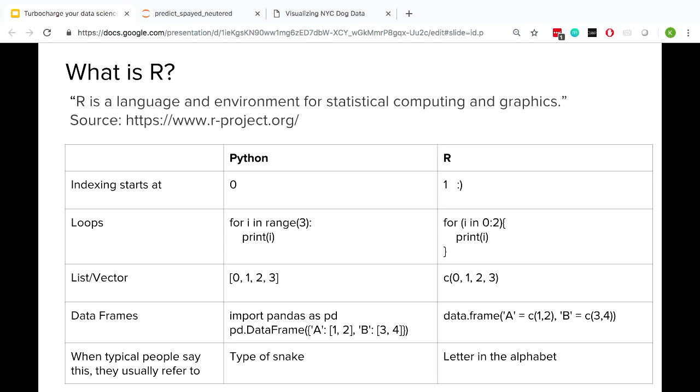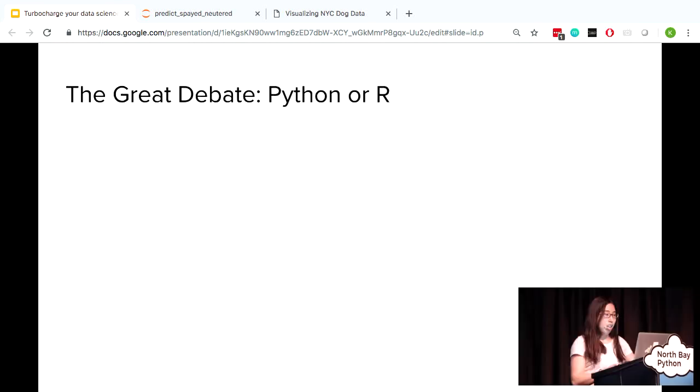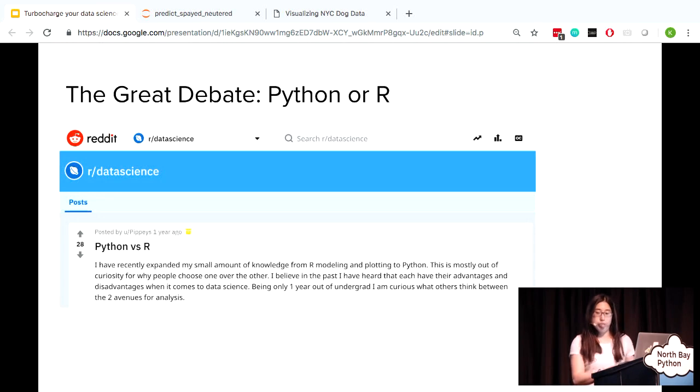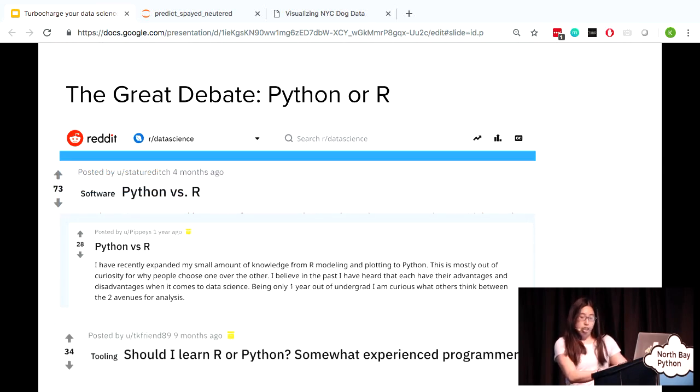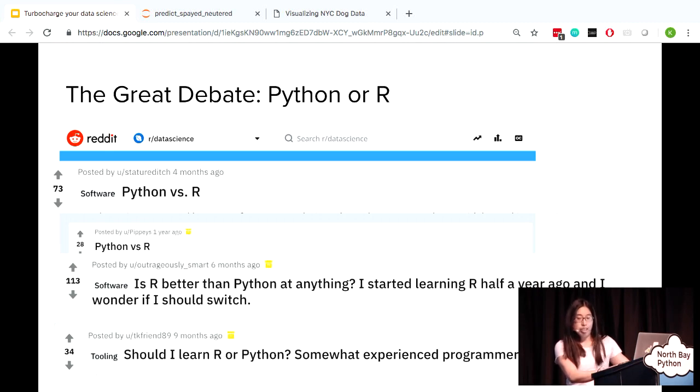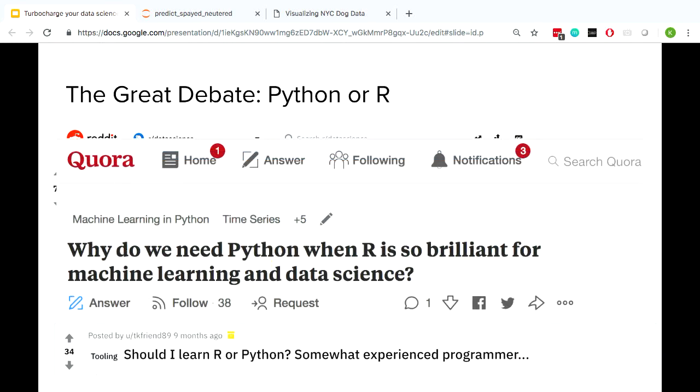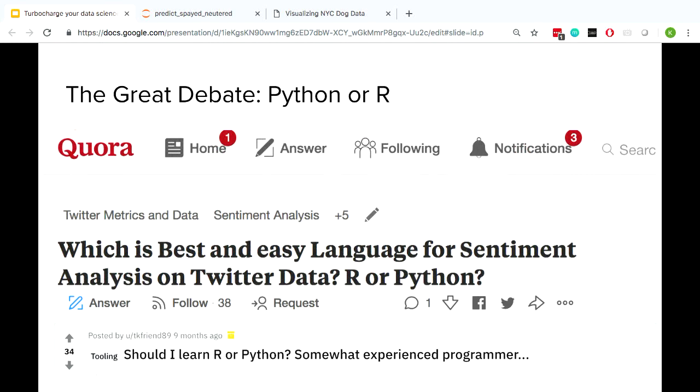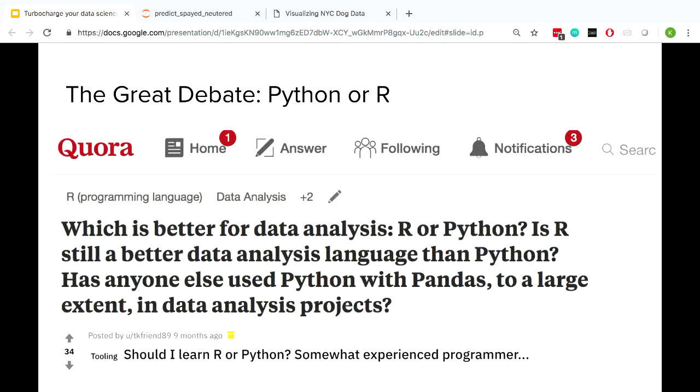One big difference is that when typical people say Python, they refer to a type of snake, while for R, they're referring to the letter in the alphabet. And R and Python are actually very similar when it comes to doing most data science work. So there is this great debate: should I use Python or R in data science? And you see it pop up in Reddit. Should I learn R or Python? Somewhat experienced programmer. Is R better than Python at anything? I started learning R half a year ago, and I wonder if I should switch. You also get the opposite. Why do we need Python when R is so brilliant, blah blah blah. Which is fast and easy language for sentiment analysis on Twitter data, R or Python? So you get the idea. They just keep asking R or Python.